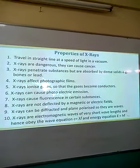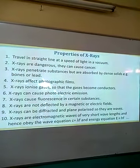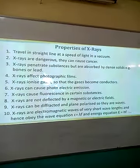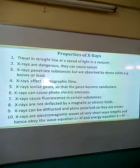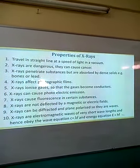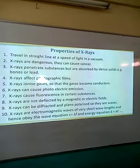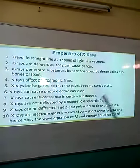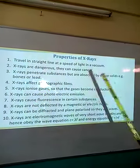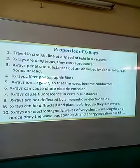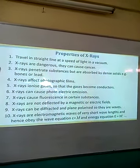Next, we have the properties of X-rays. One, these rays travel in straight lines at the speed of light. Two, they are dangerous — the moment they are exposed to the body, they can cause cancer, skin cancer, and cell mutation. Three, these rays penetrate substances of soft tissues, and at the same time can be absorbed by dense materials such as bones and lead. Four, these rays affect photographic films. Five, the rays ionize gases. Once gases have been ionized, they become conductors — they can conduct electric current.